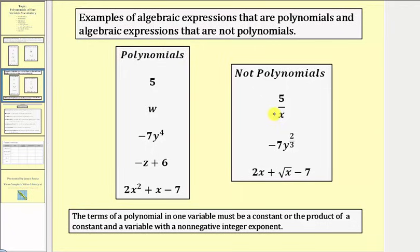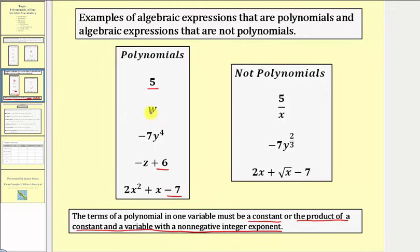The definition of a polynomial can vary based upon the source, but the terms of a polynomial in one variable must be a constant or the product of a constant and a variable with a non-negative integer exponent. Looking at our polynomials, notice how we have several constants: the constant five, the constant six, and the constant negative seven. For the remaining variable terms, including the coefficients and exponents: w is equal to one times w to the first, negative z is equal to negative one times z to the first, and x is equal to one times x to the first.